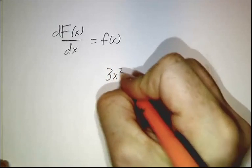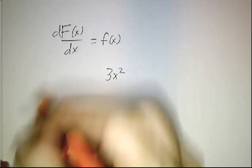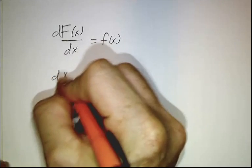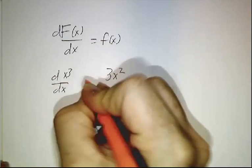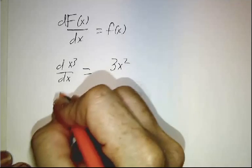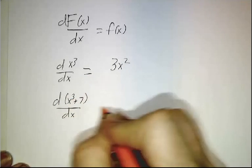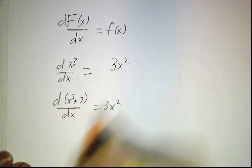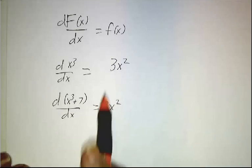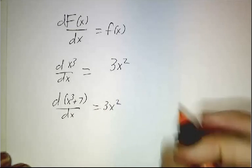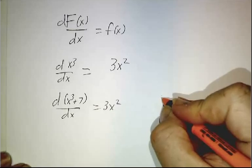What's the antiderivative of 3x²? Well, it could be x³ because the derivative of x³ is 3x². It could also be x³ plus 7 because the derivative of that is also 3x². So there's actually a lot of different antiderivatives to a function, but they all differ by a constant.